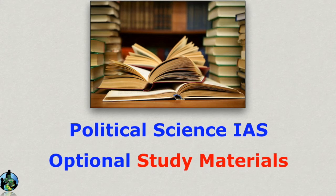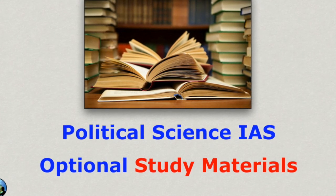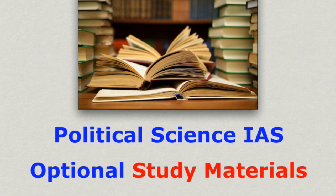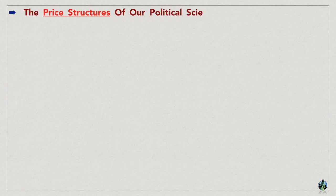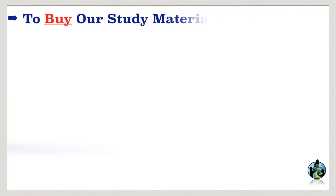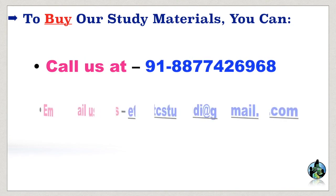The channel also provides comprehensive study materials for political science and international relations. The study material is unique not only in terms of content but also in terms of presentation — using maps, images, graphs, and tables. Materials are available in black and white as well as color print at the printing cost. You can buy one part, two parts, or complete study materials depending on your requirement. For purchases, contact at the given number or email at the given email ID.